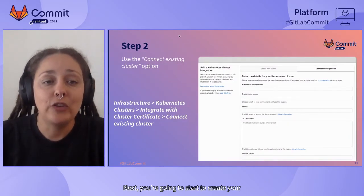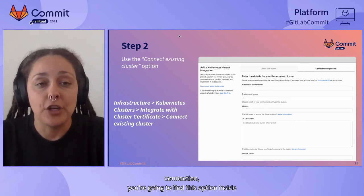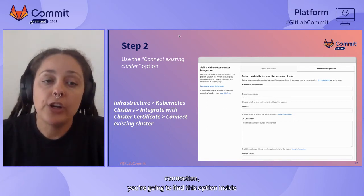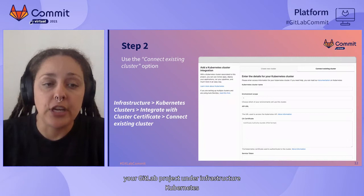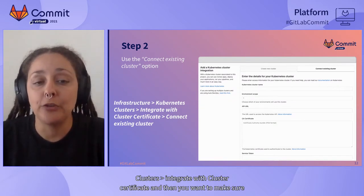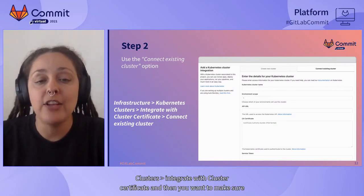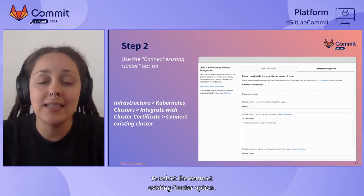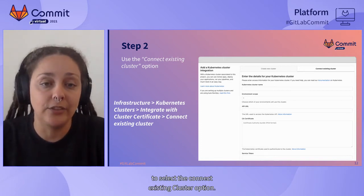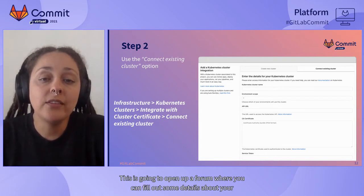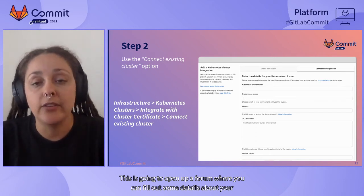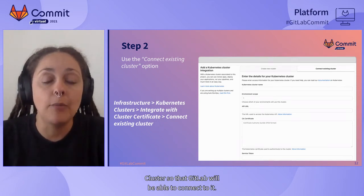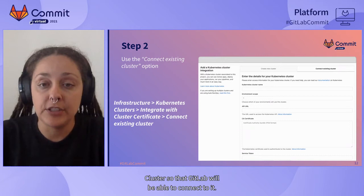Next, you're going to start to create your connection. You'll find this option inside your GitLab project under Infrastructure > Kubernetes Clusters > Integrate with Cluster Certificate, and then make sure to select the 'Connect Existing Cluster' option. This opens up a form where you can fill out some details about your cluster so that GitLab will be able to connect to it.